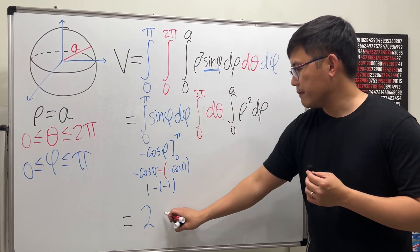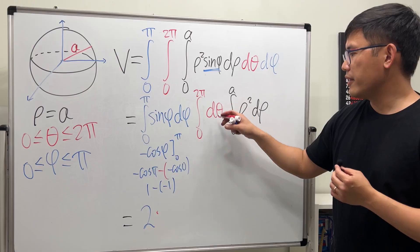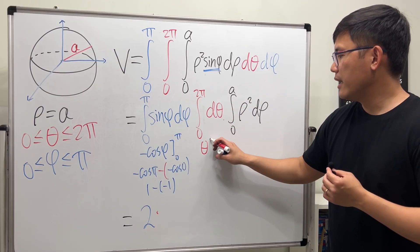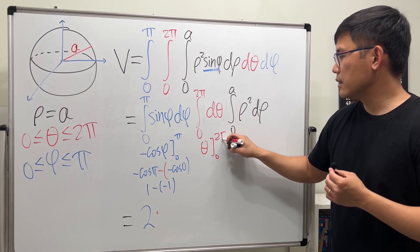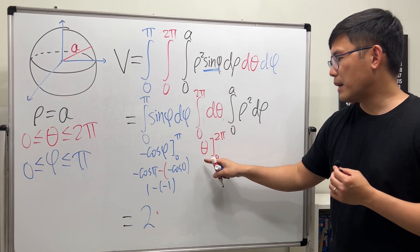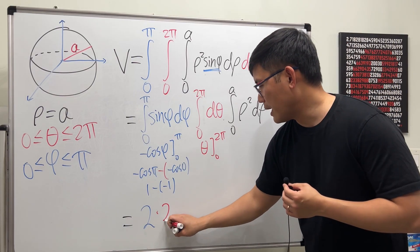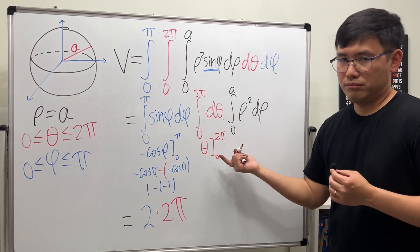And then for the red one, we get 1. Integrate 1 in the θ world, we get θ. And then plug in. All we care is just plug in 2π. That's it. So we get 2π. Plug in 0, minus 0.